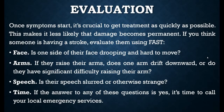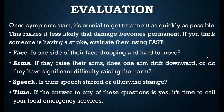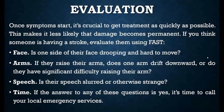Face: if you can see that the person is drooping on one side of the face and it is hard to move, that is the first evaluating point. Arms: if they raise their arms and they drift downwards, there is significant difficulty raising the arm. Speech: the person may stammer or have slurred speech, or otherwise have a strange accent of speech.